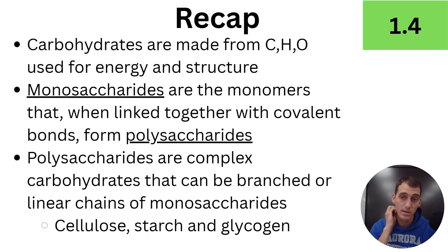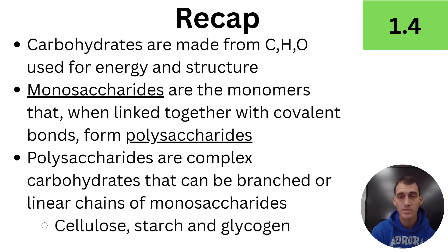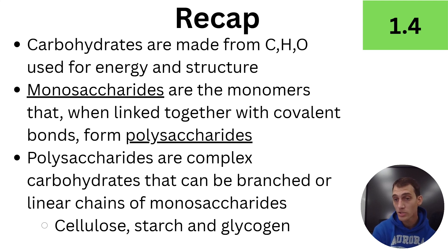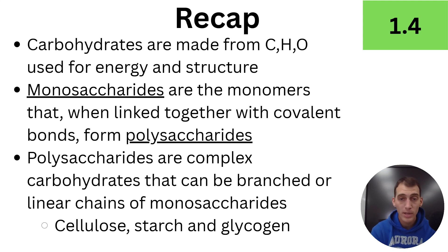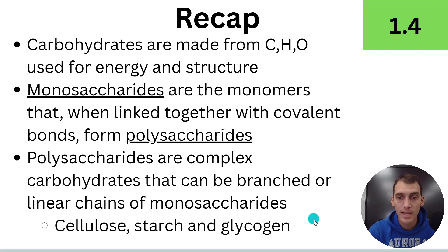To recap: carbohydrates are made from carbon, hydrogen, and oxygen, and are used for energy and structure. Monosaccharides are the monomers that when linked together with covalent bonds form polysaccharides. Monosaccharides are simple sugars; polysaccharides are complex carbs that can be branched or linear — long chains of monosaccharides. Three examples to know: cellulose, which forms plant cell walls; starch, the glucose energy storage molecule for plants; and glycogen, the glucose storage molecule for animals. That's it for this video — we're getting into lipids next, so let me know if you have any questions and we'll see you next time.